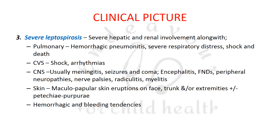Severe leptospirosis is characterized by severe hepatic and renal involvement along with pulmonary hemorrhagic pneumonitis, severe respiratory distress, ARDS, shock, and death. Cardiovascular manifestations include shock and arrhythmia. CNS presentations include meningitis, seizures, coma, encephalitis, focal neurological deficits, peripheral neuropathies, nerve palsies, radiculitis, and myelitis. Skin manifestations include macular papular eruptions on the face, trunk, and extremities, along with petechiae, purpura, and hemorrhagic and bleeding tendencies.